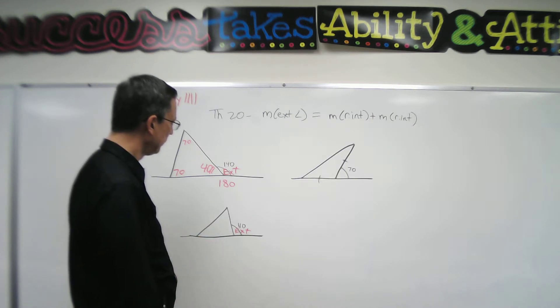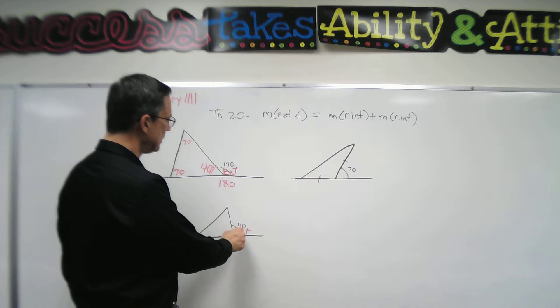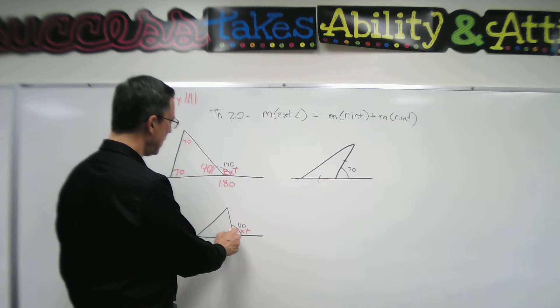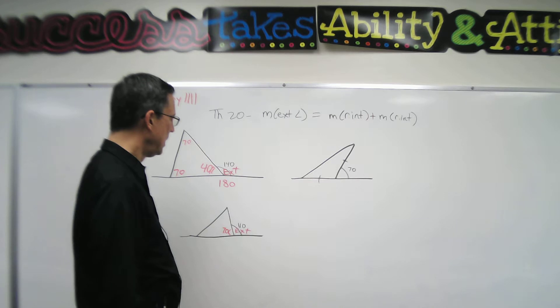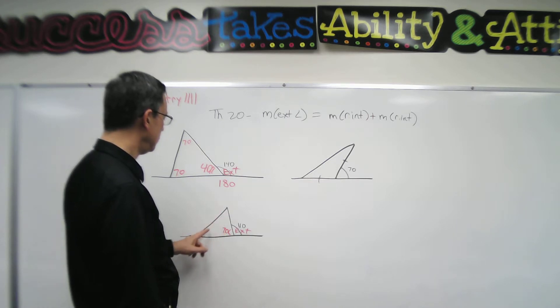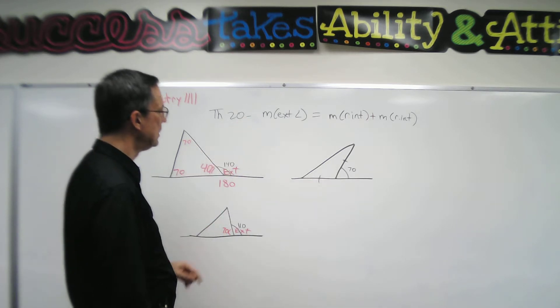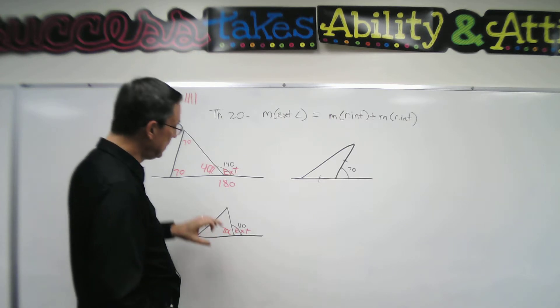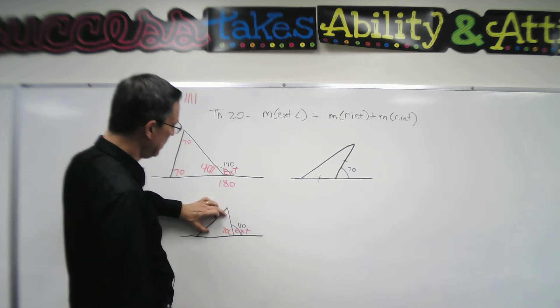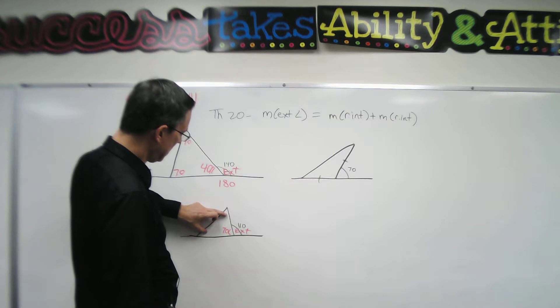Let's look at this one down here. If this is 110 degrees on the exterior, then that means that this angle inside right here would have to be 70 degrees. Now I don't know what these two are individually, but what this theorem tells me is that if I added these two together, it would equal 110 degrees.